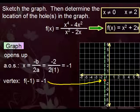And since this opens up, we know that it's going to pass through the x-axis on two different locations. So let's determine those intercepts.